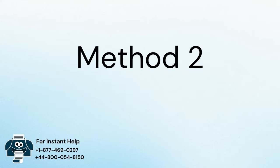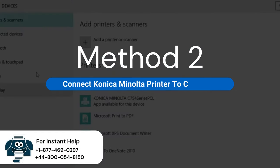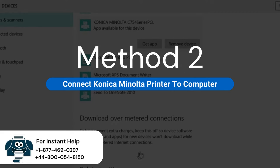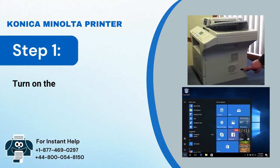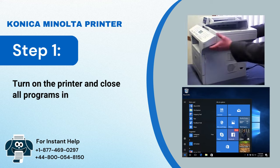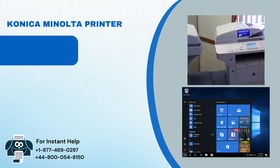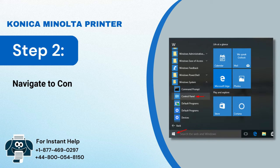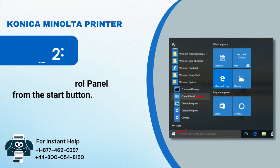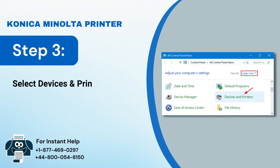Method 2: Connect Konica Minolta Printer to Computer. Step 1: Turn on the printer and close all programs in your Windows. Step 2: Navigate to Control Panel from the Start button. Step 3: Select Devices and Printers.